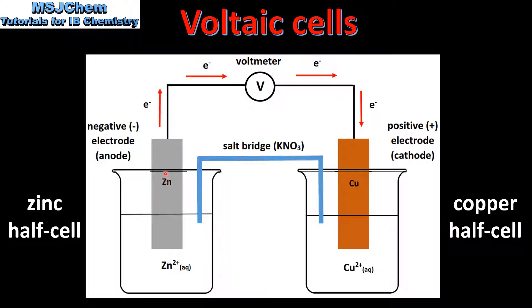And finally we have the electron flow, which is indicated by the red arrows. As you can see, the electrons are flowing from the anode to the cathode.